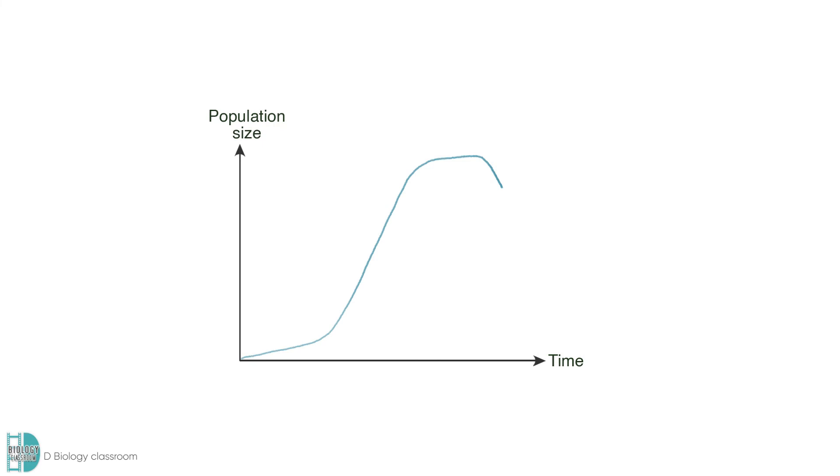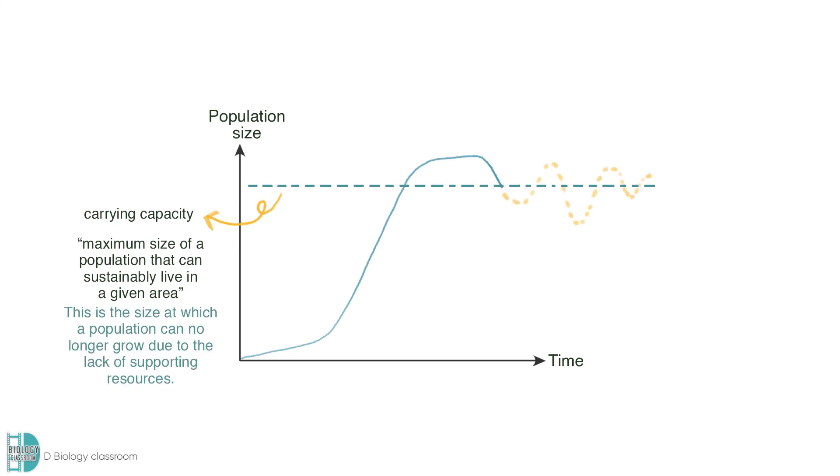Population size is usually cyclic. Further increases and falls are often observed. The graph fluctuates around a line called the carrying capacity. This is the maximum size of a population that can be sustainably lived in a given area. It indicates the size at which a population can no longer grow due to the lack of supporting resources. In conclusion, when the population size of an organism is above its carrying capacity, it will experience a decrease. When it falls below the carrying capacity, it will start to rise again.